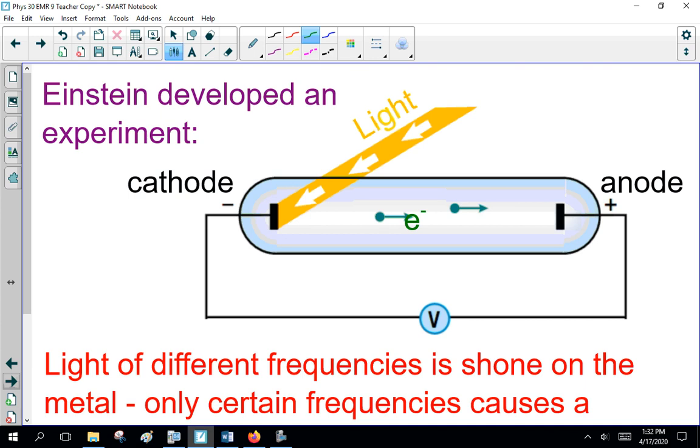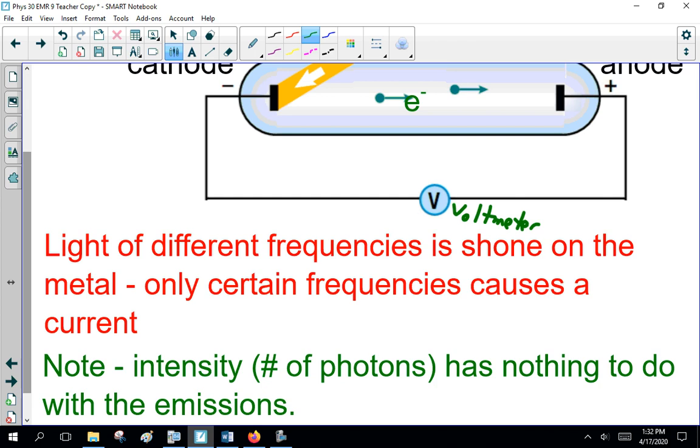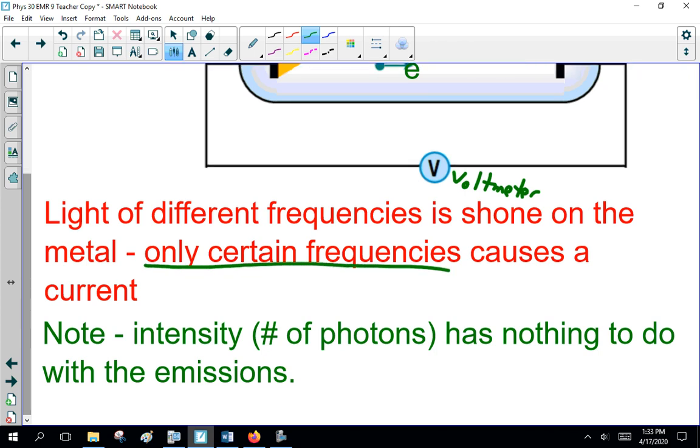Einstein developed this experiment. We used a cathode and an anode, and light shining on the cathode. We have a voltmeter to register current flow, or electrons. Light of different frequencies is shone on the metal. Only certain frequencies causes a current. This is important. Only certain frequencies. You could crank up the intensity of the light, you crank it up to a laser, it still wouldn't work. It was only certain frequencies that worked.